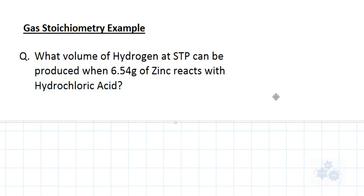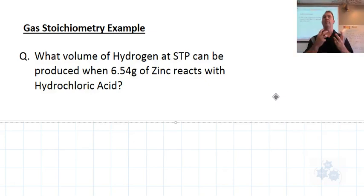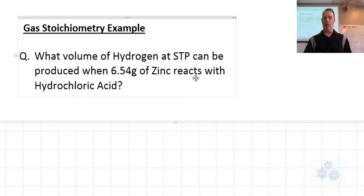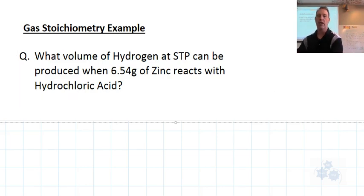Alright, so stoichiometry involving molar volume as well as mass and conversions to moles. The question here says, what volume of hydrogen gas at STP can be produced when 6.54 grams of zinc reacts with hydrochloric acid? This is a typical question.